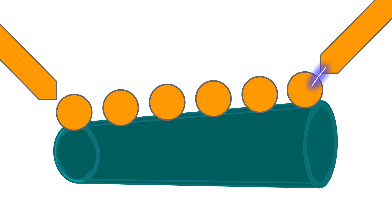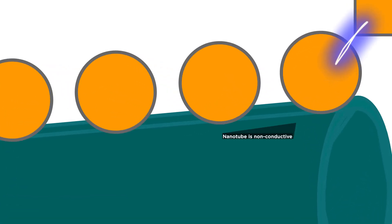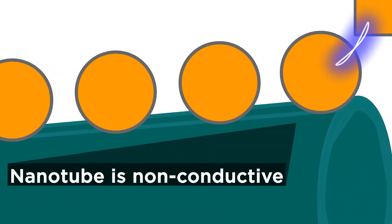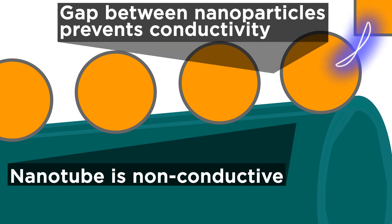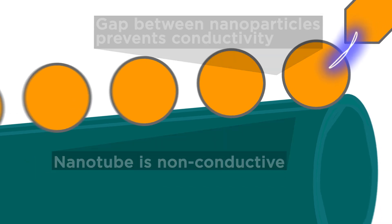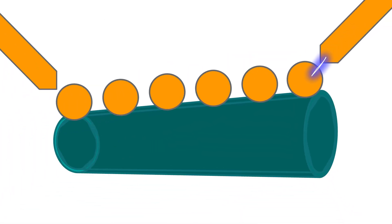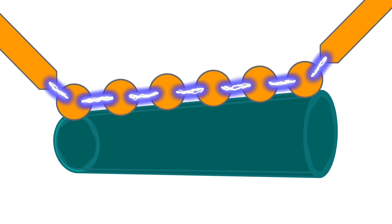When you apply a potential across this, you will not be able to flow any current because the nanotube itself is insulated, whereas the gold nanoparticles are separated from each other with a small gap. Until you apply sufficient potential, you will start to see electrons tunnel across the gold nanoparticles.